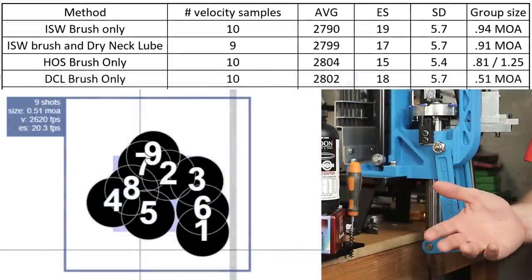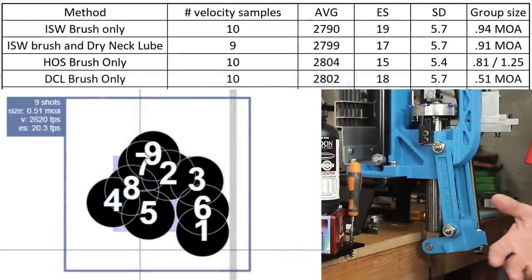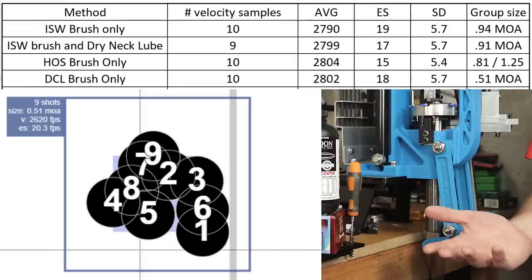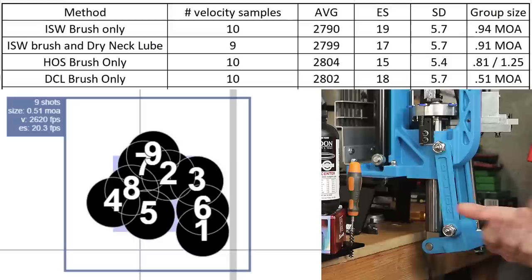So moving on to our Dillon case lube. Over 10 samples, our average velocity was 2802 feet per second. Our standard deviation was 5.7, essentially identical to what our Imperial sizing wax process was. Extreme spread was 18 feet per second. However, the group size on 9 rounds was 0.51 MOA.